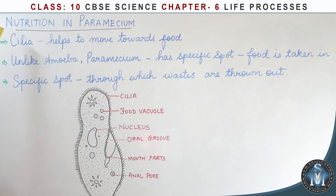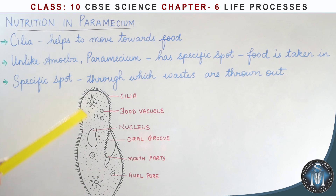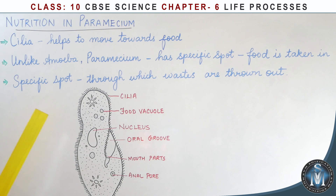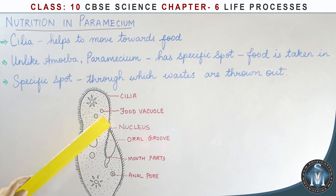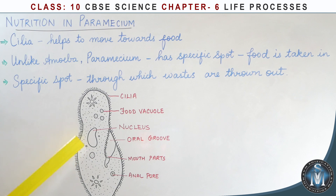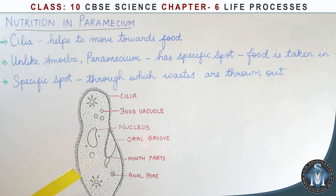Next, we will talk about nutrition in Paramecium. Paramecium is also a unicellular organism. The difference is that Paramecium has a body full of hair-like structures called cilia. The cilia help move food into the oral groove, where food vacuoles are formed and the food is digested.